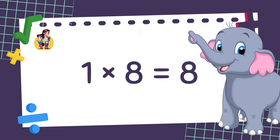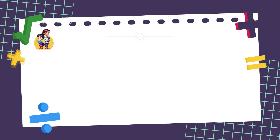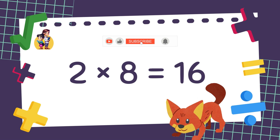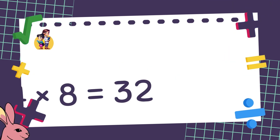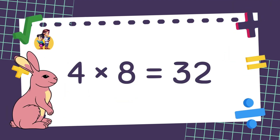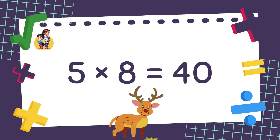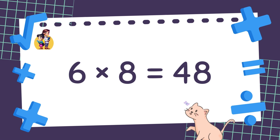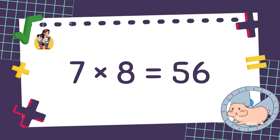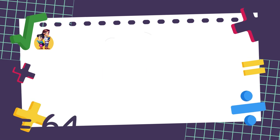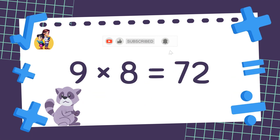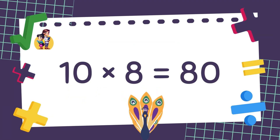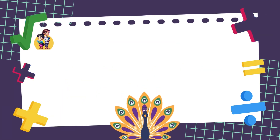1 times 8 is equal to 8. 2 times 8 is equal to 16. 3 times 8 is equal to 24. 4 times 8 is equal to 32. 5 times 8 is equal to 40. 6 times 8 is equal to 48. 7 times 8 is equal to 56. 8 times 8 is equal to 64. 9 times 8 is equal to 72. 10 times 8 is equal to 80. Well done!